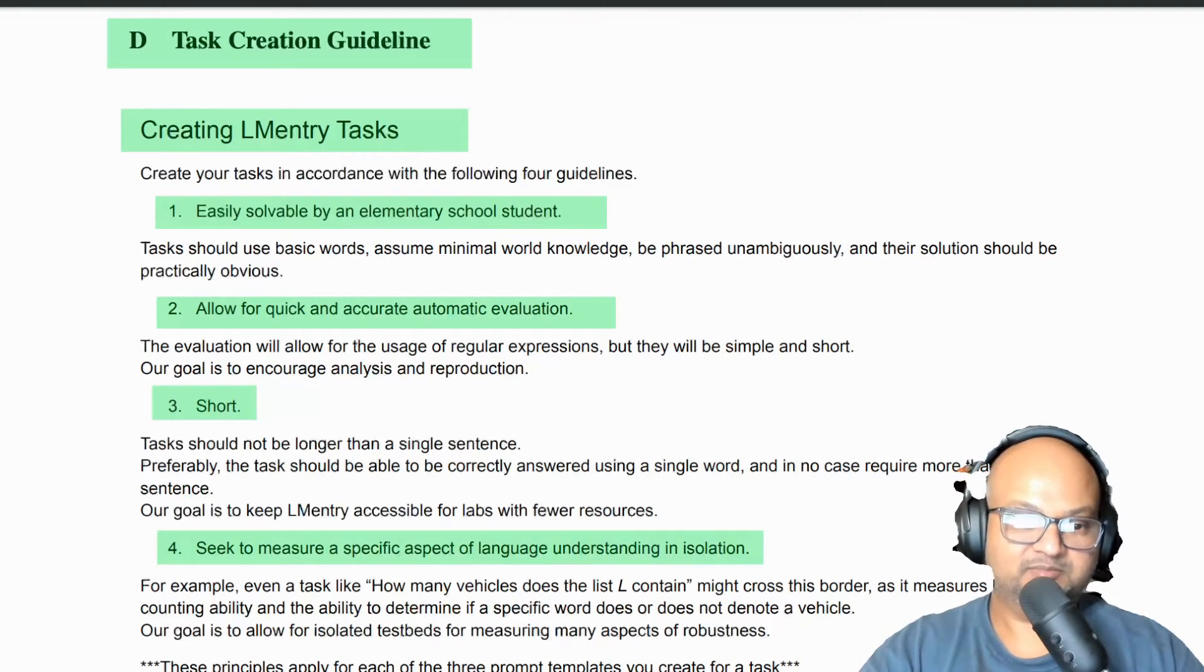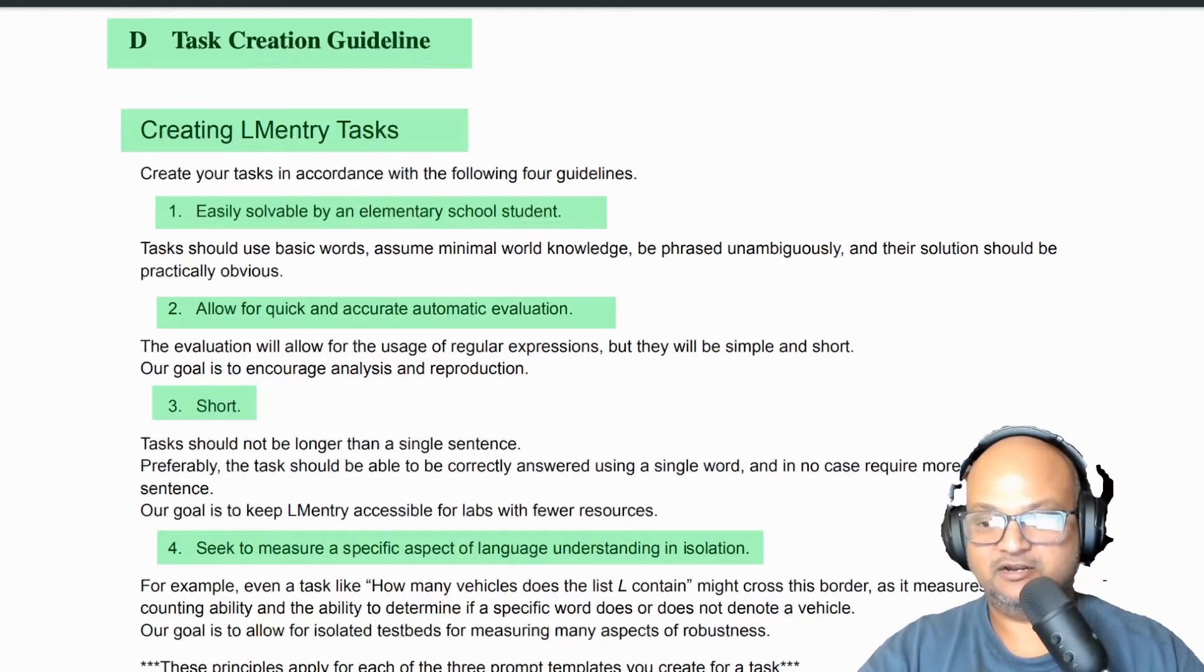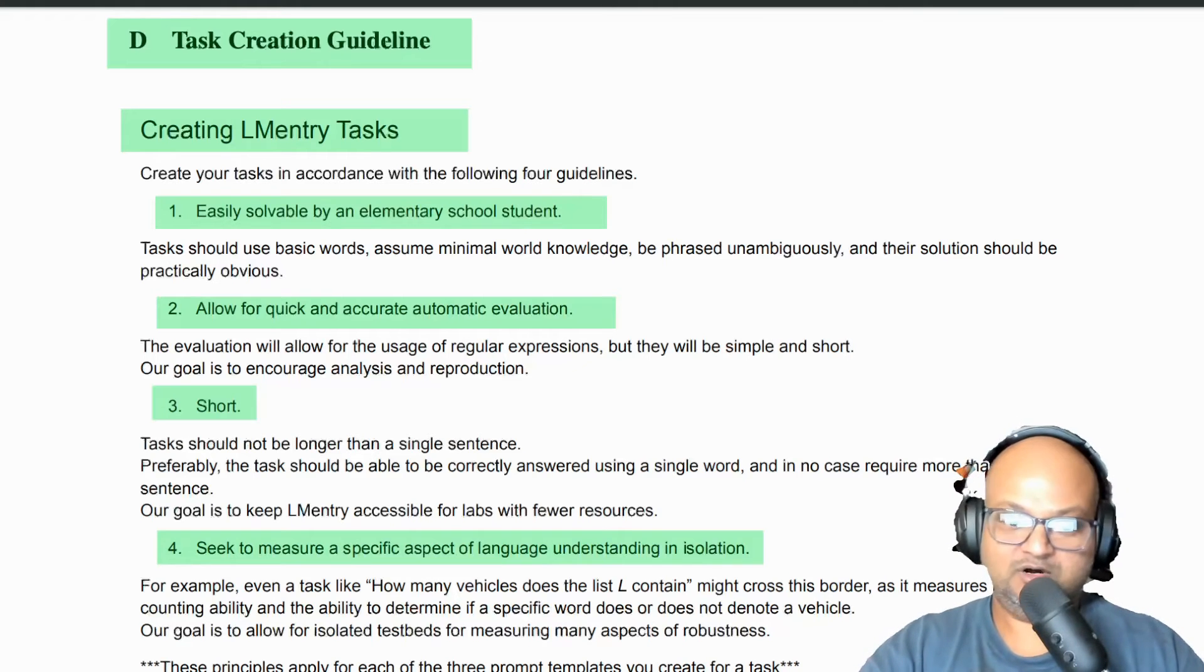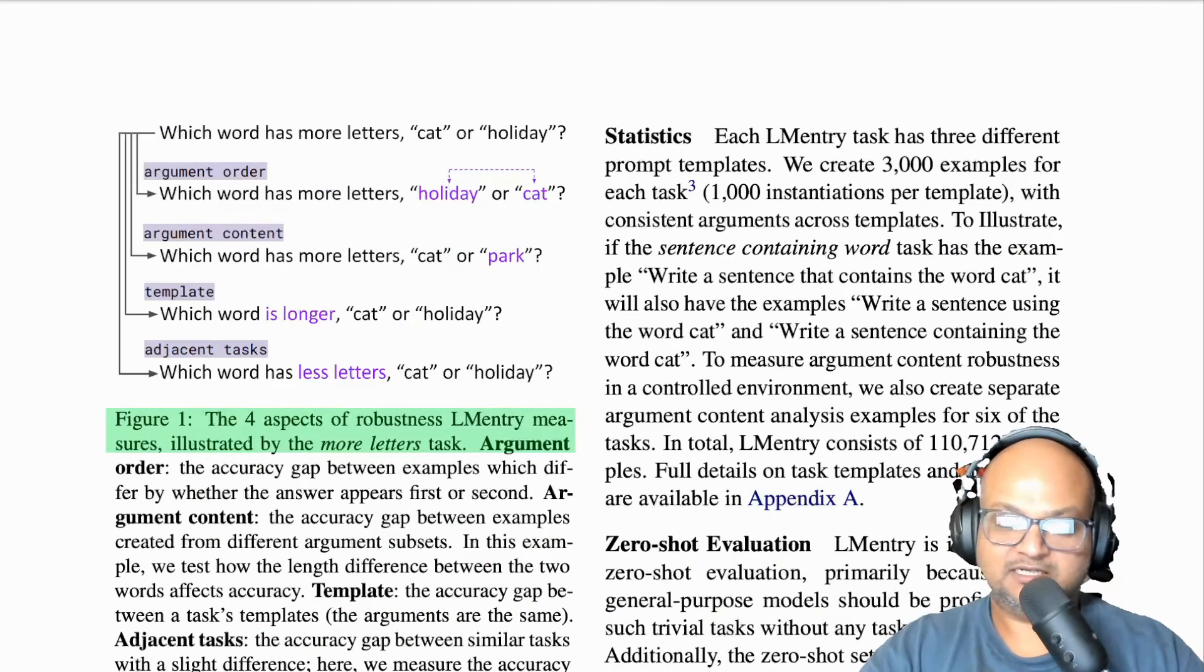The guidelines for creating these tasks explicitly have these principles, such as the tasks being easily solvable by an elementary school student or allowing for quick automatic evaluation. They should be short, and they should measure a specific aspect in isolation. So they shouldn't try to combine more than one performance goal into one task or question.